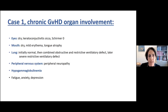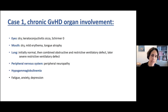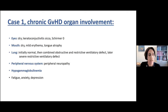He had involvement in several other organs: cicatricial conjunctivitis with Schirmer's measured at zero, dry mouth with tongue atrophy. PFTs were initially normal but later developed combined obstructive and restrictive ventilatory defect, then predominantly restrictive issues. He had peripheral neuropathy, hypogammaglobulinemia, and small pleural effusions consistent with serositis. This normally jolly and upbeat young man was struggling with worsening fatigue, anxiety, and depression.